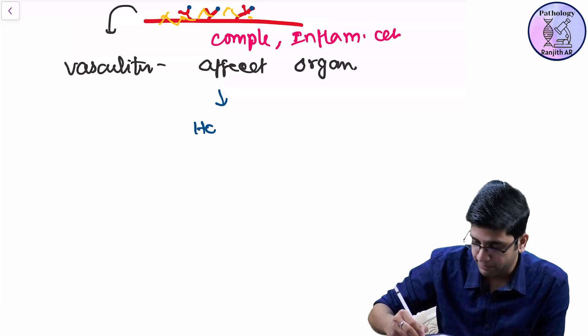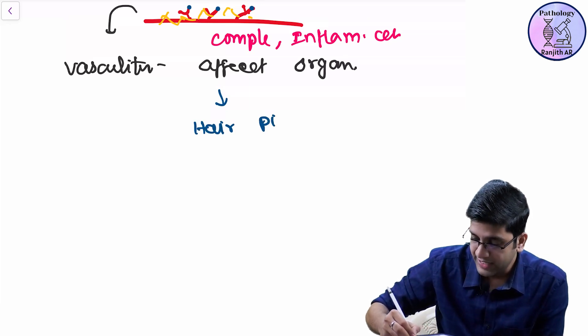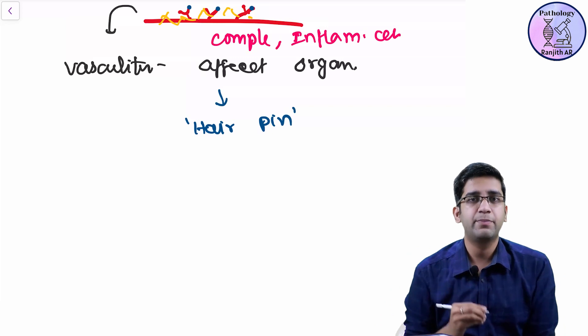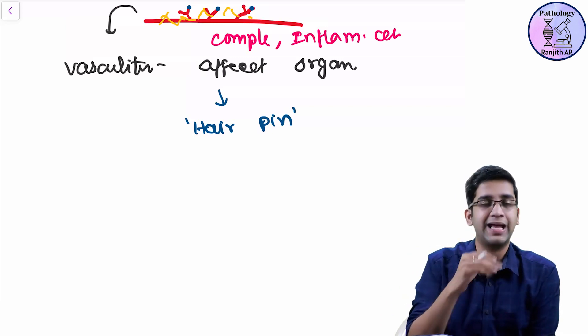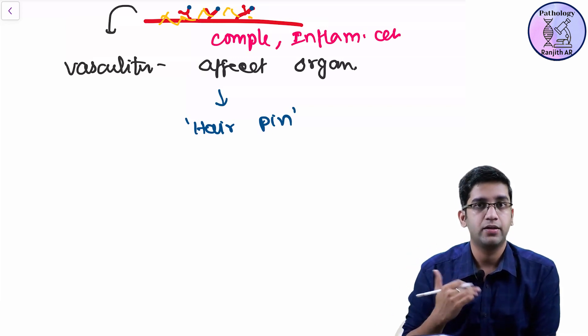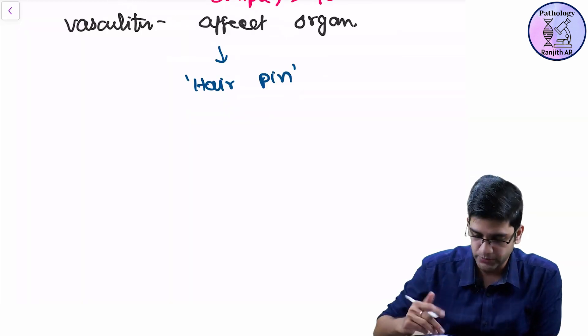The problem is the bent, hairpin. Wherever you have lots of hairpin-shaped blood vessels, they get deposited there and they're going to attack my vessels. It's going to attack the organ as well.